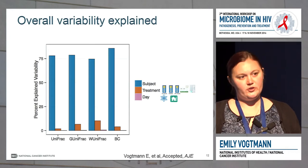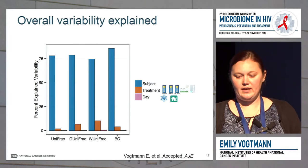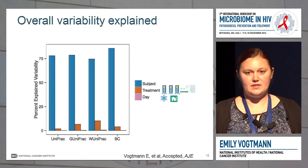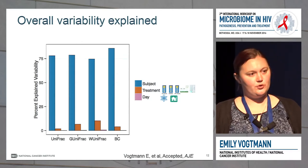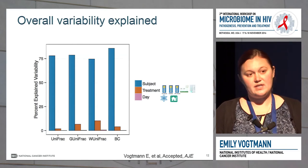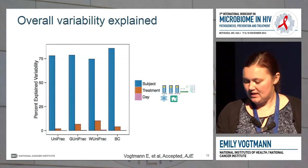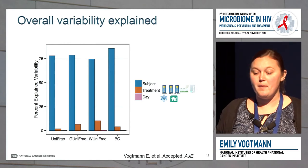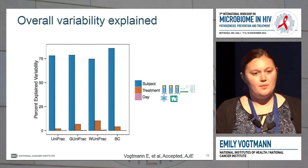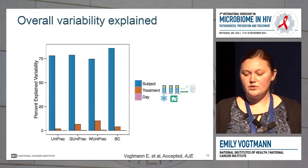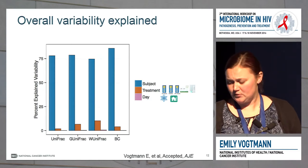To start, we looked at the overall variability explained — whether differences seen in the microbiome were due to subject, treatment or collection method, or the day of freezing. As you can see, the percent variability explained is mainly due to the subject. Basically, the biggest difference in the microbiome was due to just the differences between subjects.